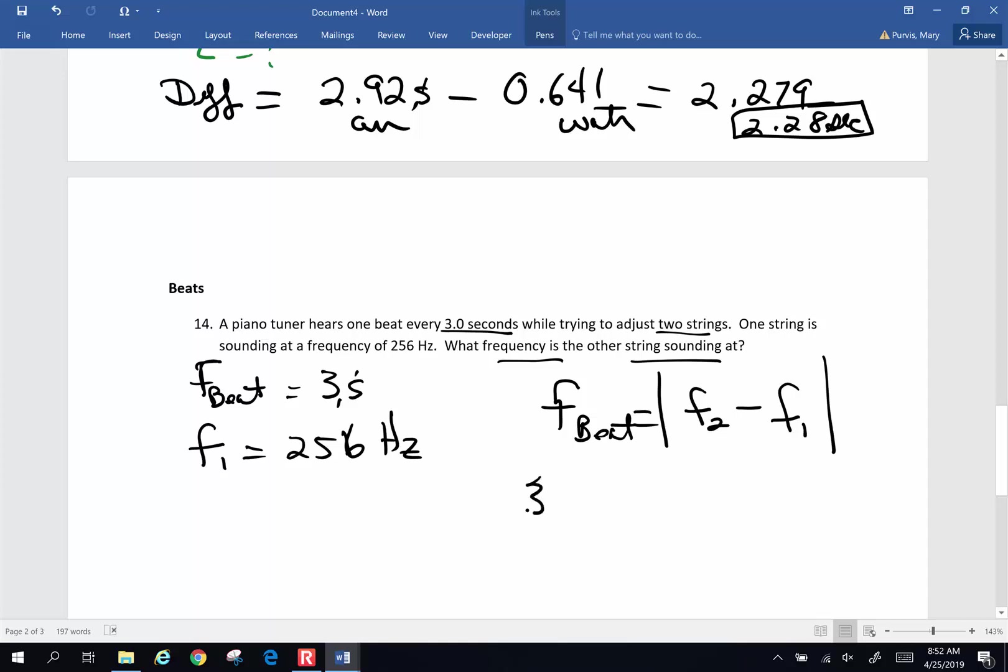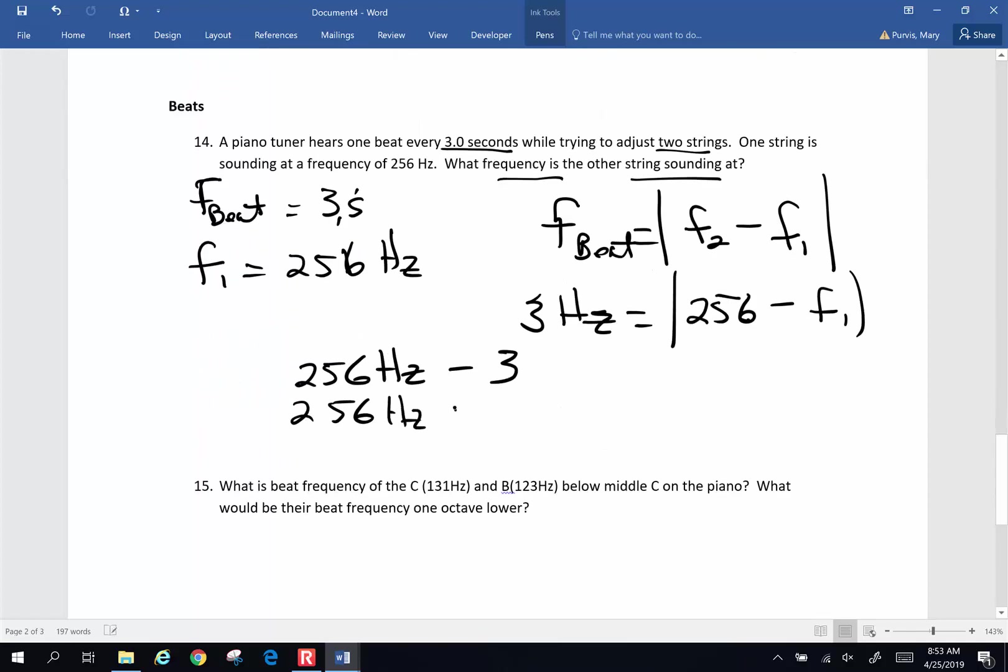So if the beat frequency is three hertz and one frequency is 256 hertz, the other frequency will either be 256 hertz minus three or 256 hertz plus three. So my other possible choices are 253 hertz or the other one could be 259 hertz. Those are my other two possible beat frequencies that we could have on my strings.